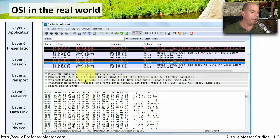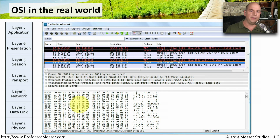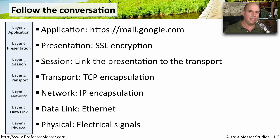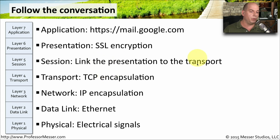Moving up to layer 3, the network layer, we have the source IP address and the destination IP address. Going to layer 4, we're at the TCP layer, and you can see the port numbers in use between these two devices. Because all of the remaining information is encrypted, you can effectively combine layers 5, 6, and 7 into the next part — which is the Secure Sockets Layer, or the encrypted portion of this communication. So in that single captured frame: electrical signals at layer 1, Ethernet MAC addresses at layer 2, IP addresses at layer 3, a TCP port number at layer 4, session and presentation information combined, and everything encrypted via SSL.